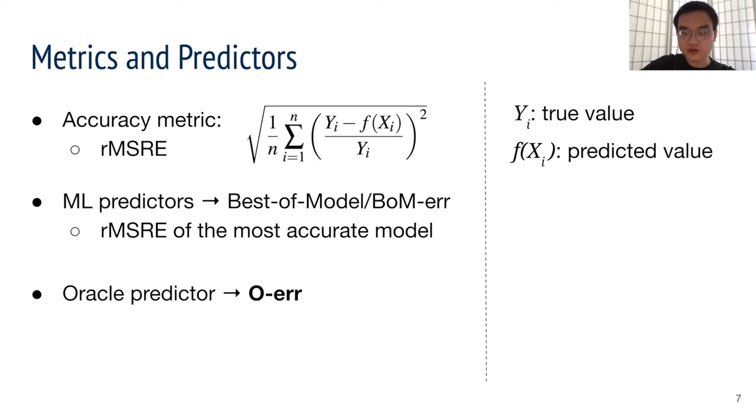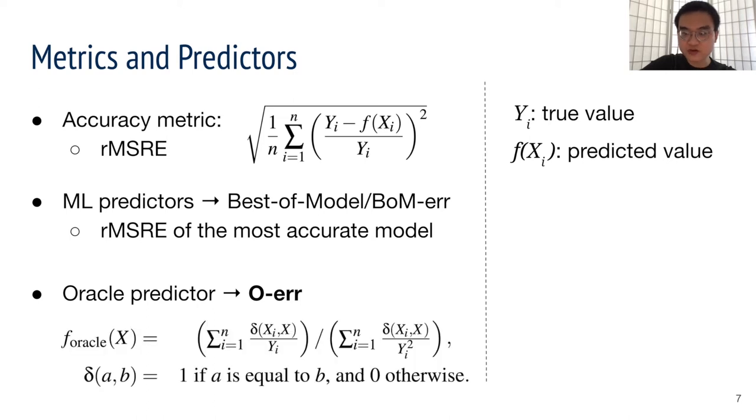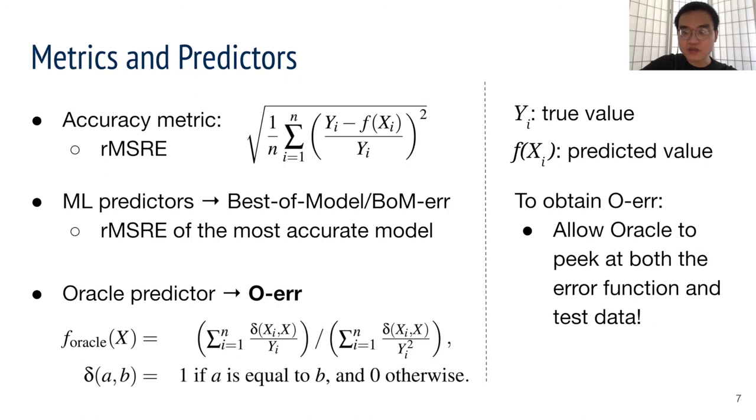Meanwhile, as key to our methodology, we derive an oracle predictor from the equation of RMSRE that will find and use a value that minimizes the score as the predicted performance, using the test set data. We refer to this prediction error as O error. This O error gives a lower bound on the prediction error that any model could achieve, and hence a high O error would suggest that predicting performance is, in some sense, impossible. In this setup, we collect multiple runs and data points for each application and parameter evaluated.